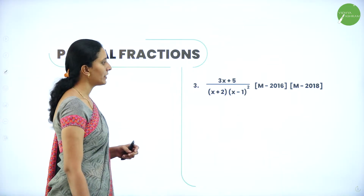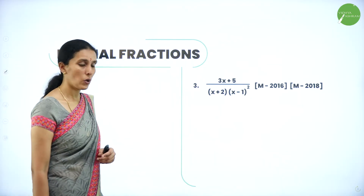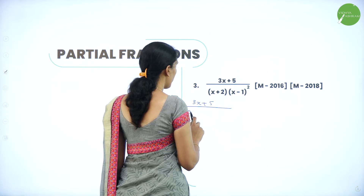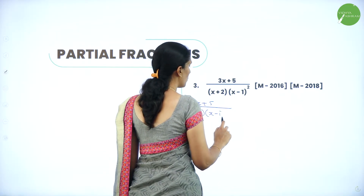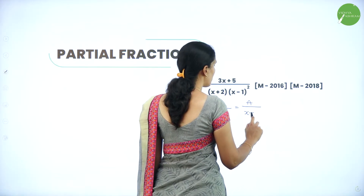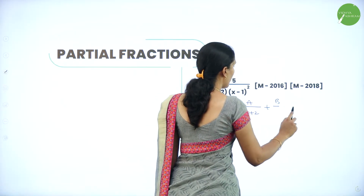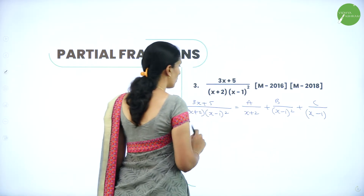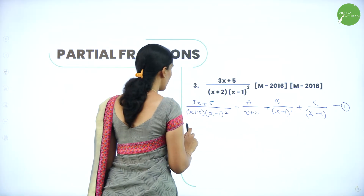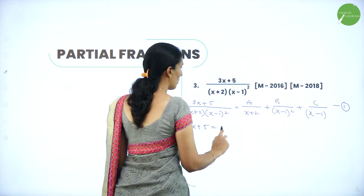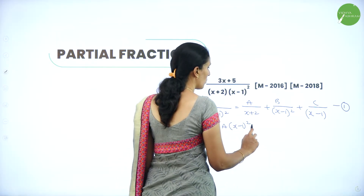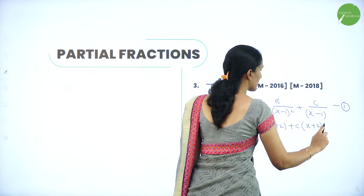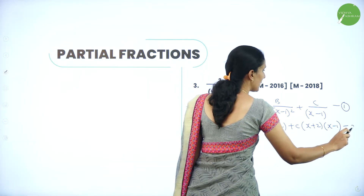Next, in the same format, we have (3x+5) divided by (x+2)(x−1)². We can directly write: (3x+5)/[(x+2)(x−1)²] = A/(x+2) + B/(x−1)² + C/(x−1). Take this as equation 1. Multiplying through gives: 3x+5 = A(x−1)² + B(x+2) + C(x+2)(x−1). Take this as equation 2.